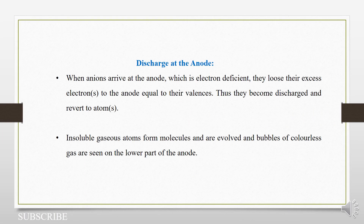Then lastly we have discharge at the anode. Our anode is our positive electrode. So negative ions will have to come to the anode when we close the switch. So when anions arrive at the anode, which is electron deficient,